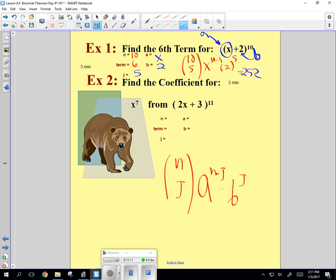So this is going to be 252 x to the 10 minus 5. 2 to the fifth is 32. Could somebody calculate what's 252 times 32? 8,064. And there we didn't have to actually expand it and then find that sixth term. We just used the formula to do it. Feeling okay?